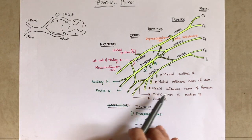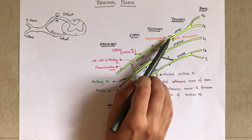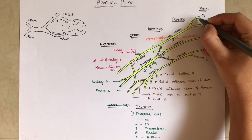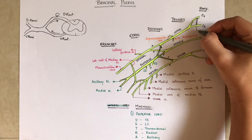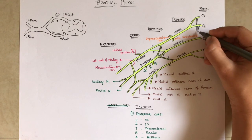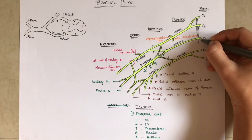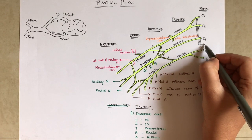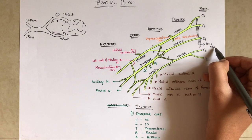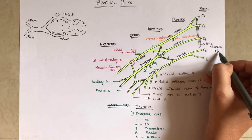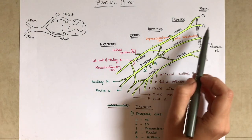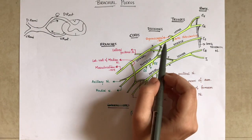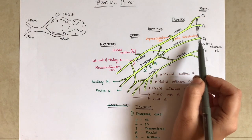Branches are not just coming from the cords — we have a few branches coming from the trunks, and a few branches coming directly from the roots. From the roots, we have the long thoracic nerve, which is formed from contributions from C5, C6, and C7, and which supplies the serratus anterior muscle. From the upper trunk, we have the suprascapular nerve and the nerve to subclavius.